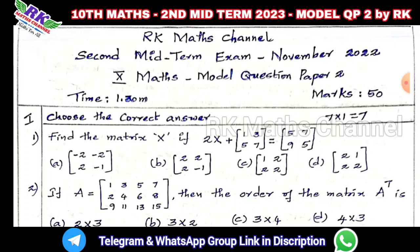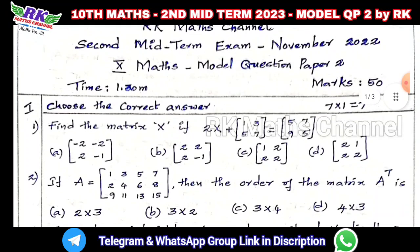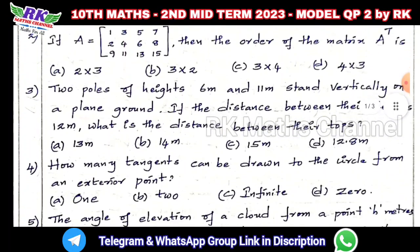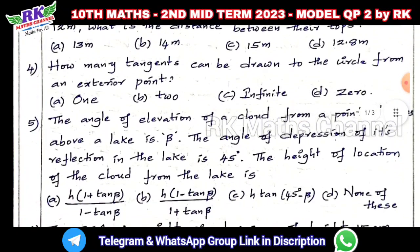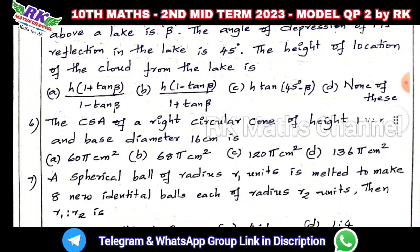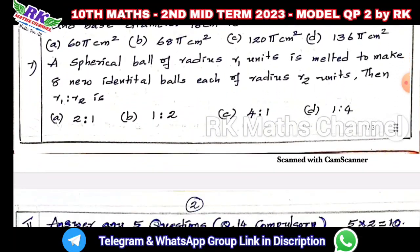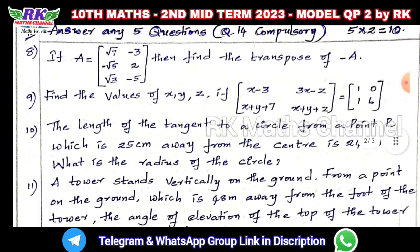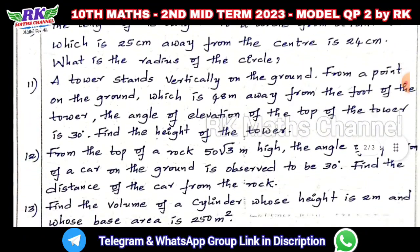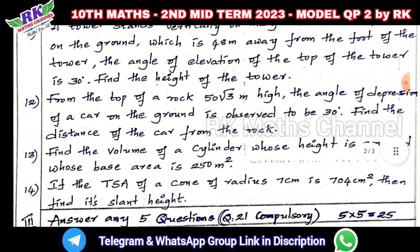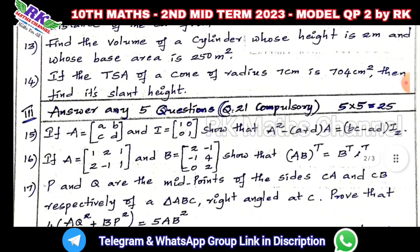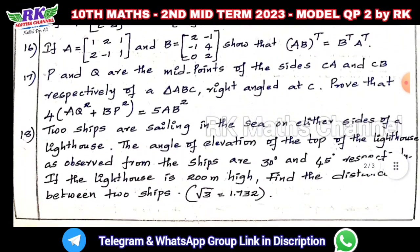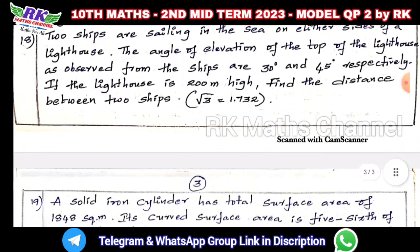Second minimum exam has the same 30-35 questions. There are two more questions, seven questions total. Question number 14 is a compulsory question. Next path: five more questions, 7 questions total, 5 questions. Question number 20 is a compulsory question.